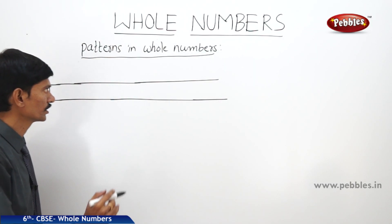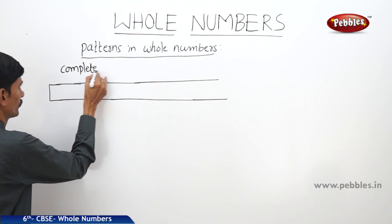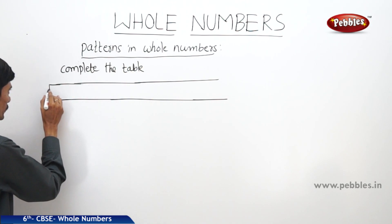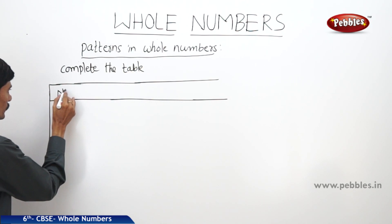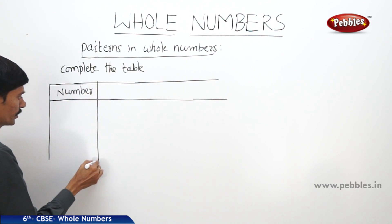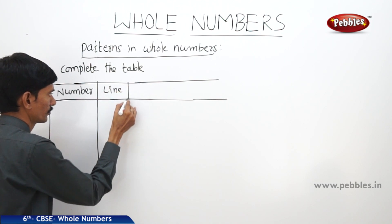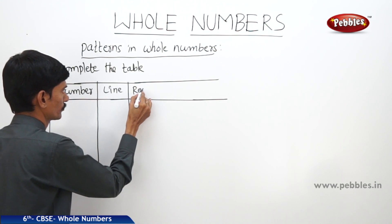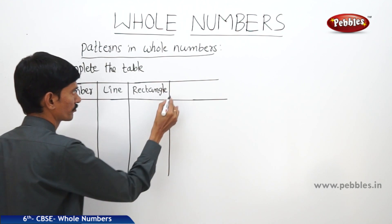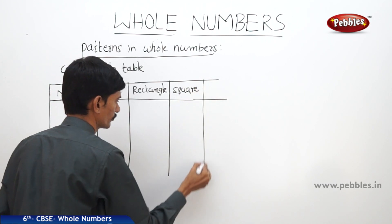Now let's see the next table. Complete the following table. In the table, the first column is number. You have to check whether the number can be shown as a line, then rectangle, then square, then triangle.